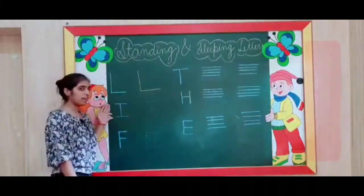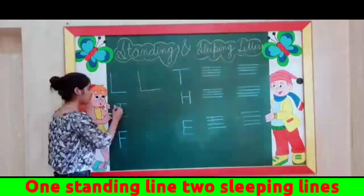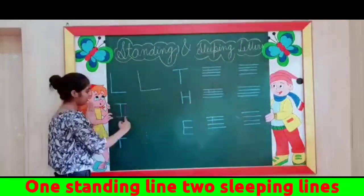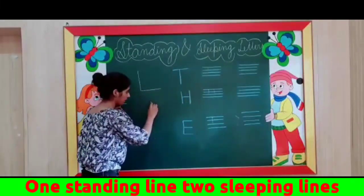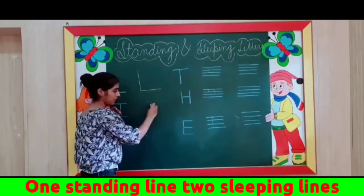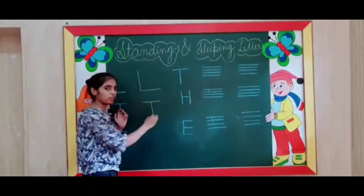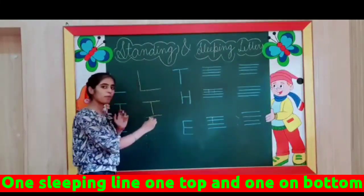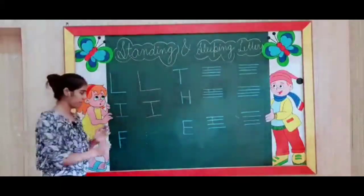Next letter we have is I — I with one standing line and two sleeping lines. So now we write one standing line, one sleeping line on the top, and the next sleeping line on the bottom. This is I. Very good.